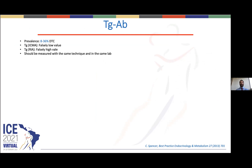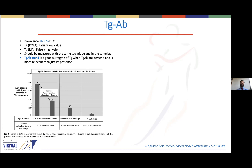Any time we measure thyroglobulin, we must also measure thyroglobulin antibodies, because their prevalence is 8 to 36 percent. They can induce falsely low thyroglobulin values when using chemiluminescence assays, or falsely high levels when using radioimmunoassays. Thyroglobulin antibodies should be measured with the same technique and in the same lab, because the thyroglobulin antibodies trend is a very good surrogate of thyroglobulin when they are present, and is more relevant than just the presence of thyroglobulin antibodies.